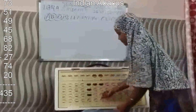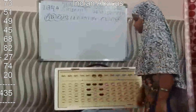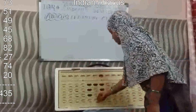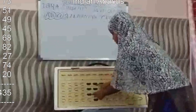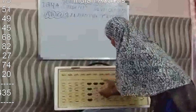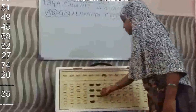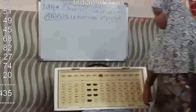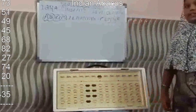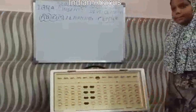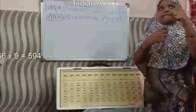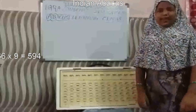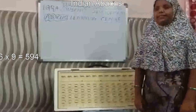Minus 27, 74, 20. That is 435. 66 into 9, 590.